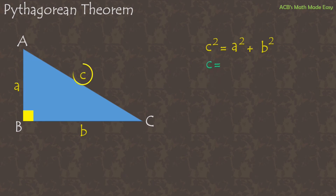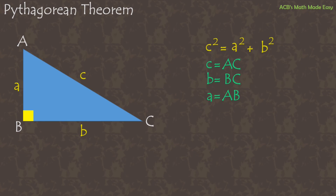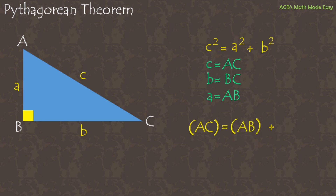In the figure, c is the distance from vertex A to vertex C. b is the distance from vertex B to vertex C. And a is the distance from vertex A to vertex B. So c becomes AC, a becomes AB, and b becomes BC — but do not forget, they are squared.